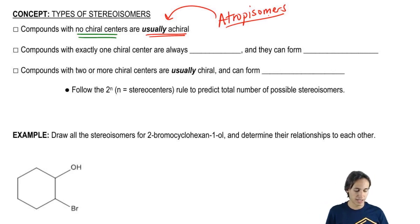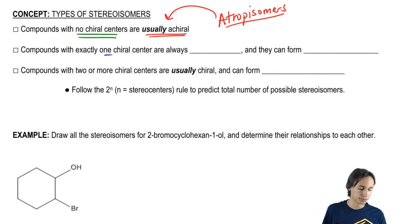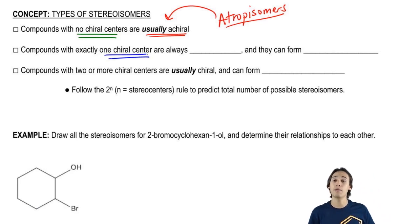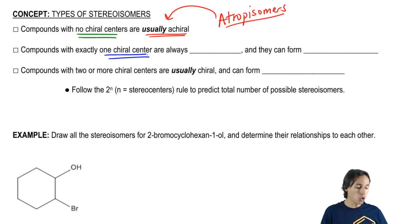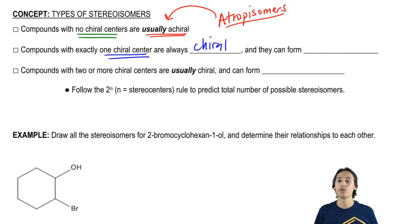Now let's go on to the next category. How about if a compound has exactly one chiral center? Then that compound is always going to be chiral — always, there's no way to avoid it.